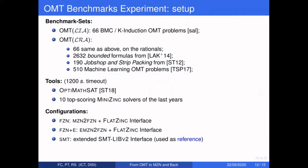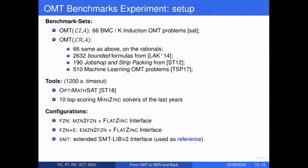For OMT benchmarks, we used both linear integer arithmetic and linear rational arithmetic problems. For linear integer arithmetic, the best results were obtained by OptiMathSAT using the FlatZinc interface. We attribute this to the deduction capabilities of the MiniZinc compiler, which can simplify some constraints in the input formula. Most MiniZinc solvers reported errors or timed out on these instances.